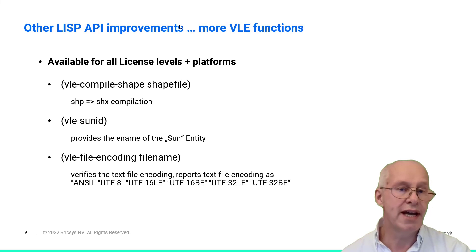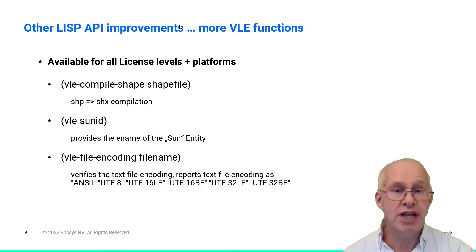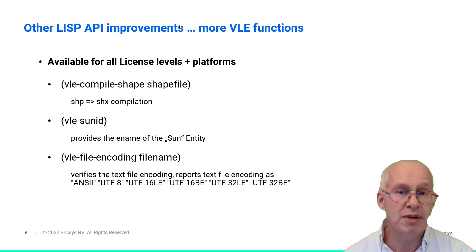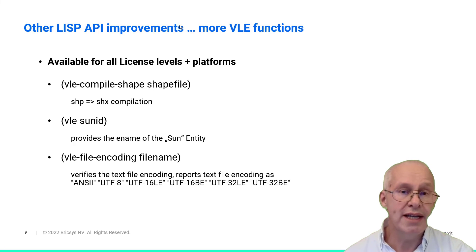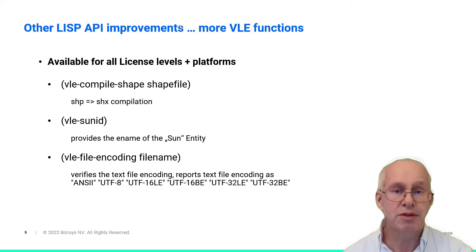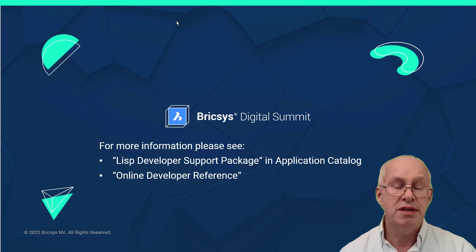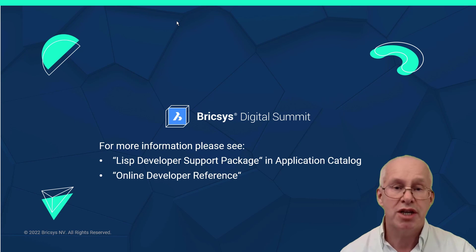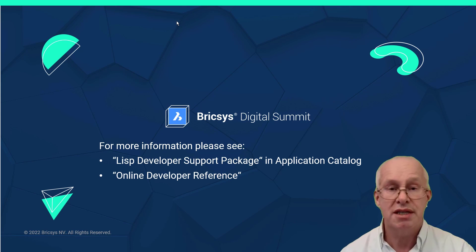A few more functions were added to our VLE functions library. Most useful is a feature to compile SHP shape font files into SHX format. Note that all VLE functions are also provided for other AutoLISP-compatible CAD systems by loading our VLE extension LSP files, which are located in the BricsCAD installation folder and also provided by our LISP developer support package. All these new LISP features with version 23 are documented in our LISP developer support package, which is a freeware download at our application catalog. The online developer reference will also include all the new and extended LISP features.